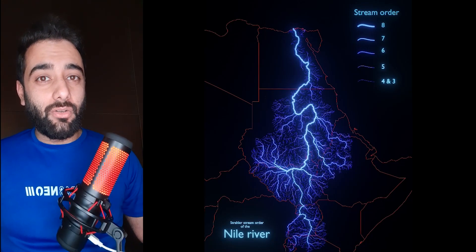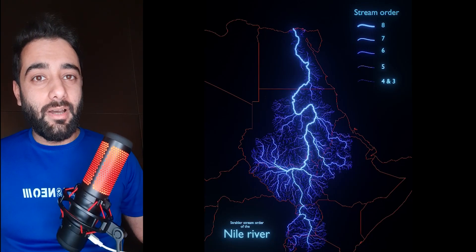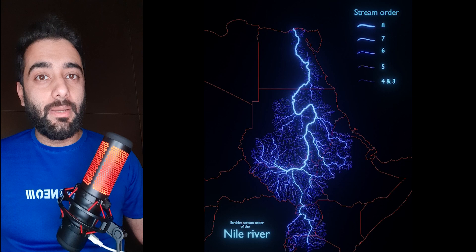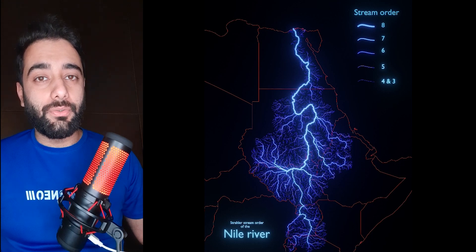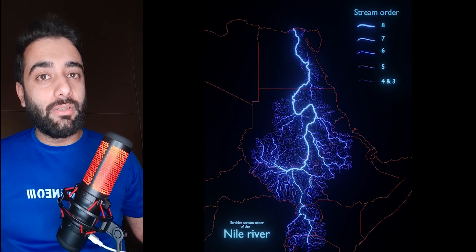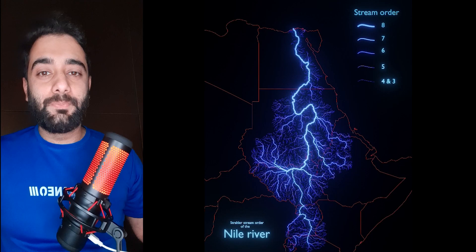In this video we are going to make a map showing the stream order of the Nile River based on HydroSHEDS.org. To make this map we will use ArcMap and Blender. Let's get started.